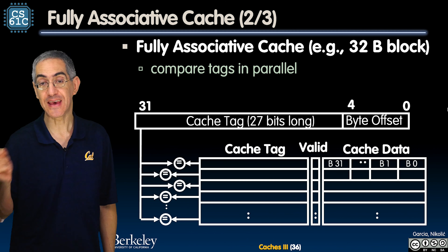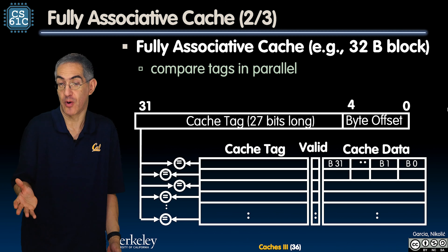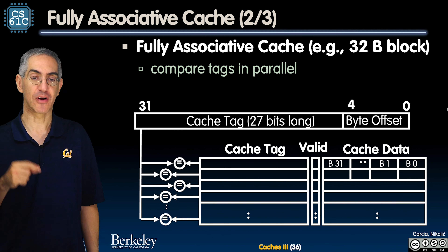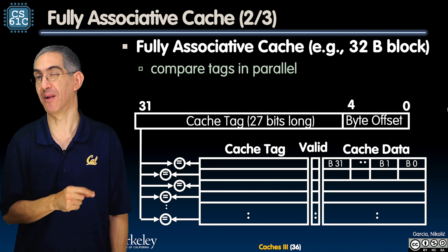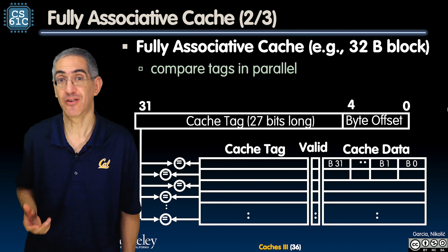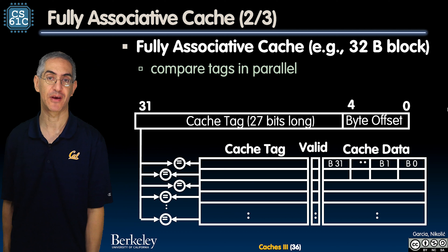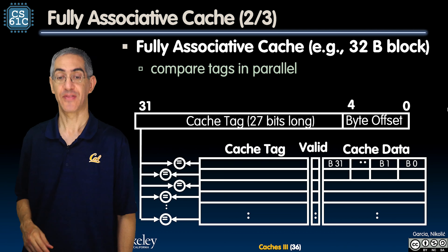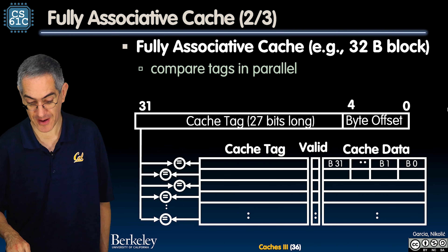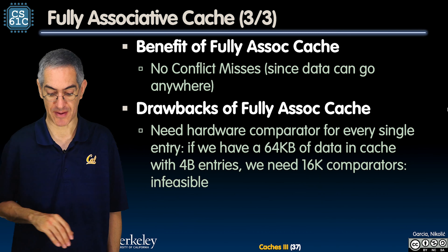The key here is that hardware will try to compare all tags in parallel. If I can build the circuitry for that, it means I can compare all tags simultaneously and figure out whether I got a hit or not based on whether they match.